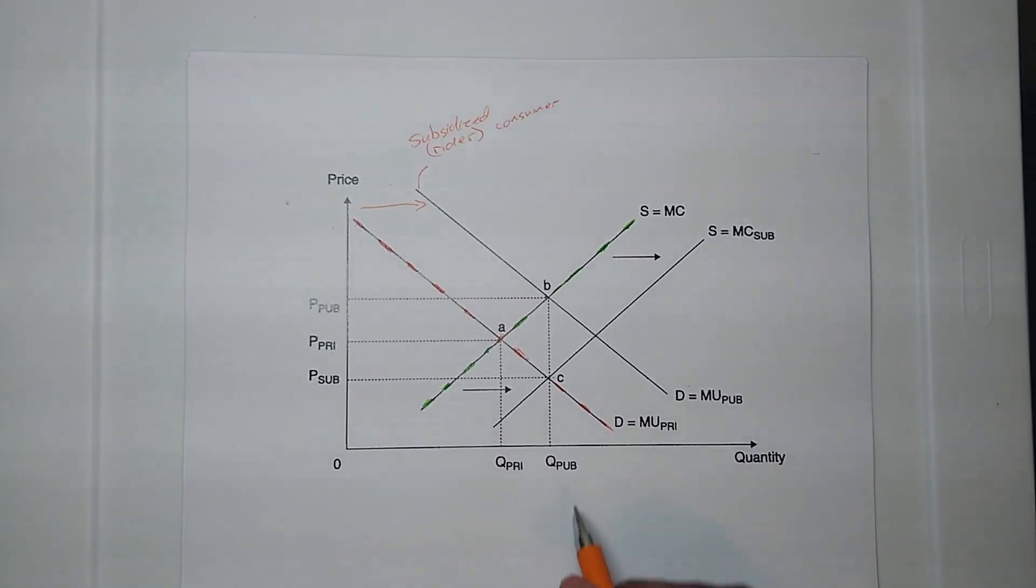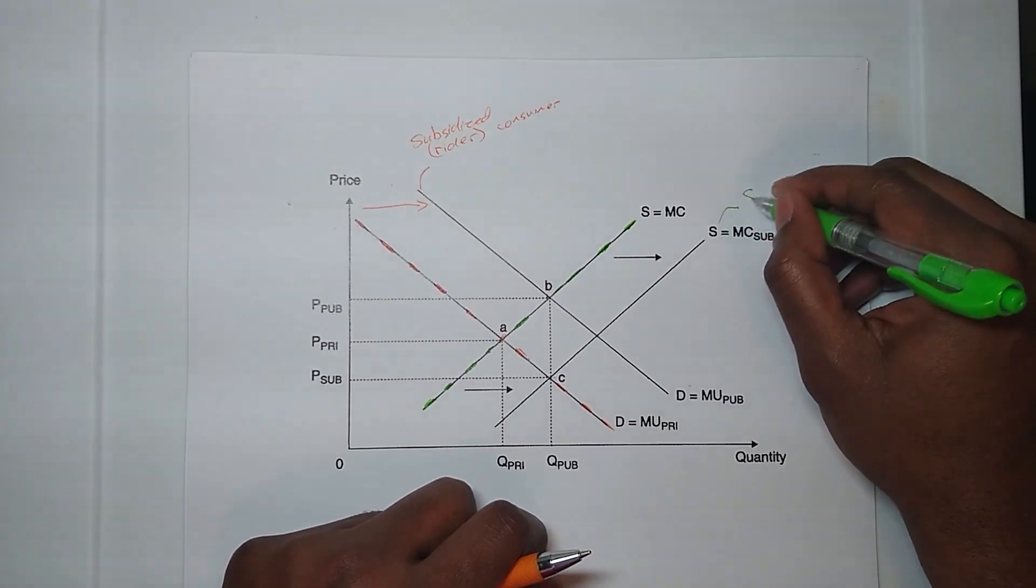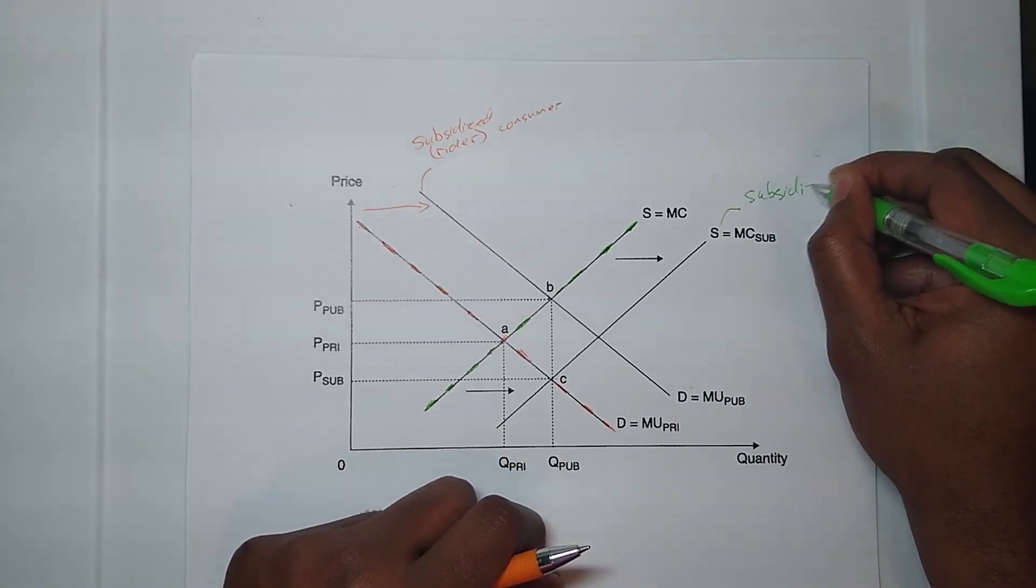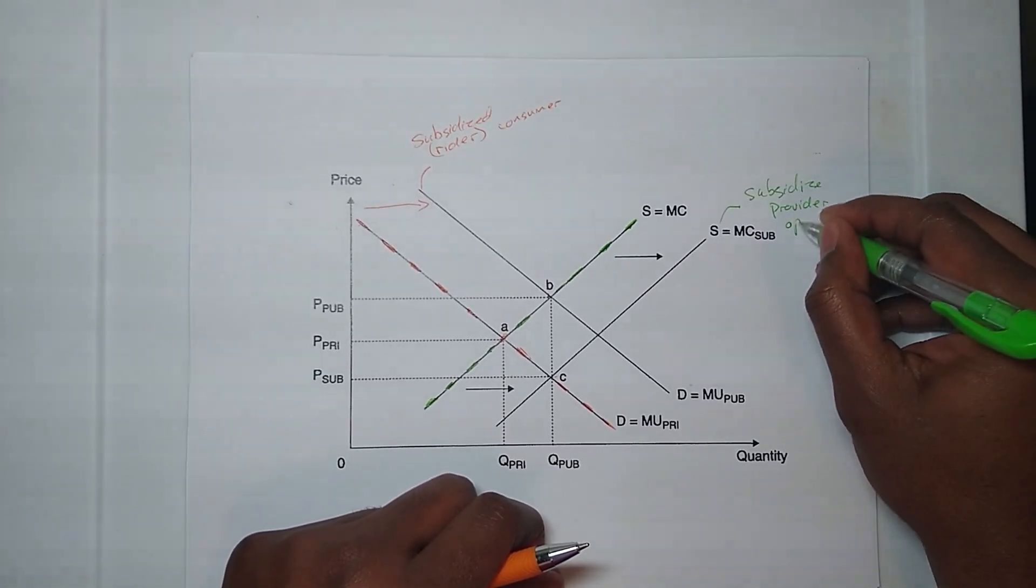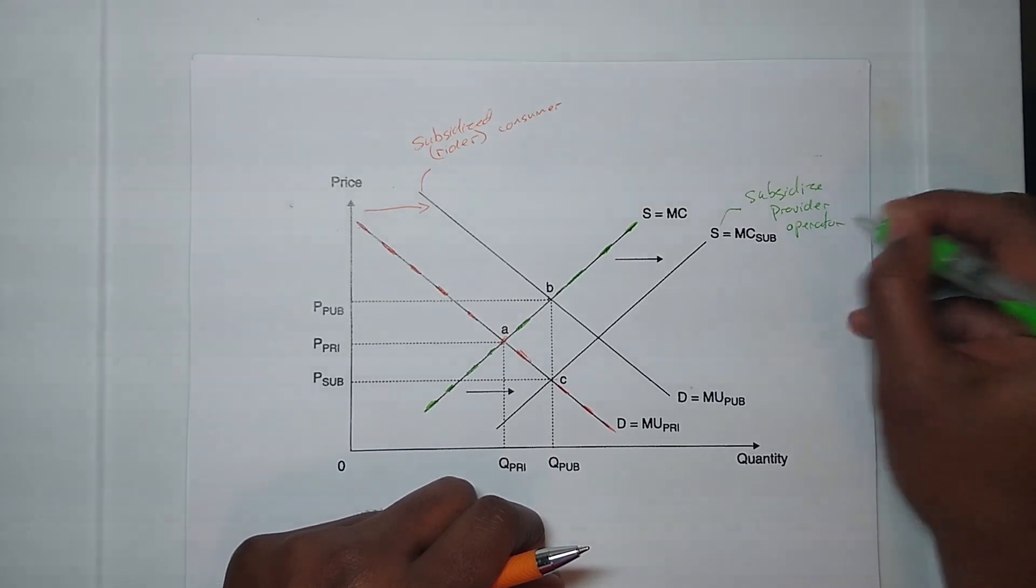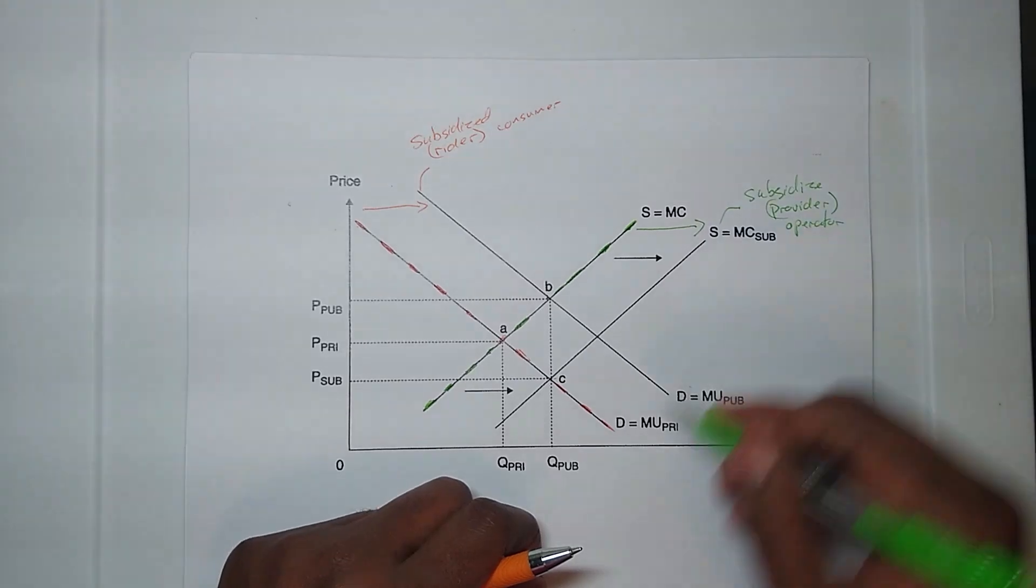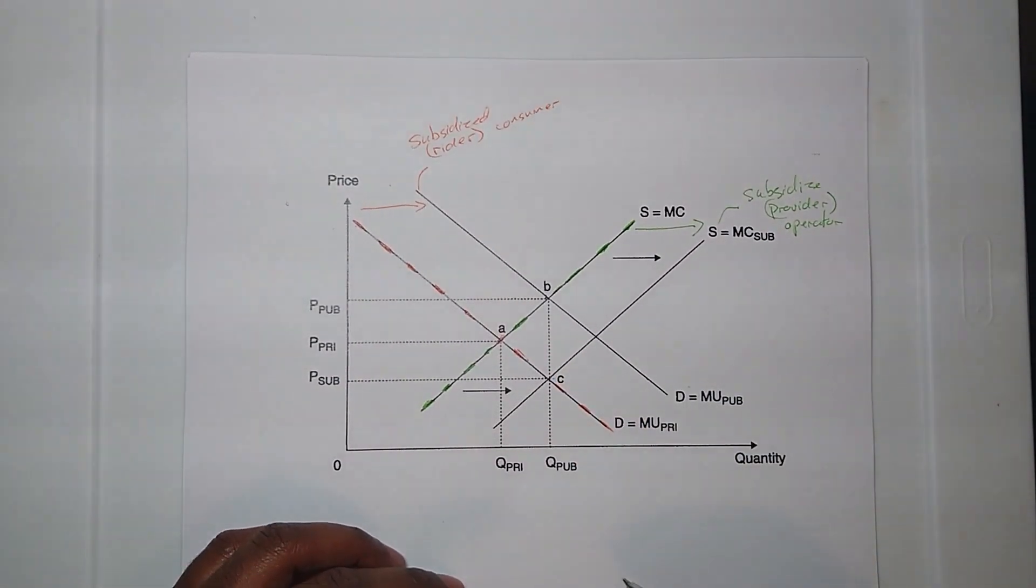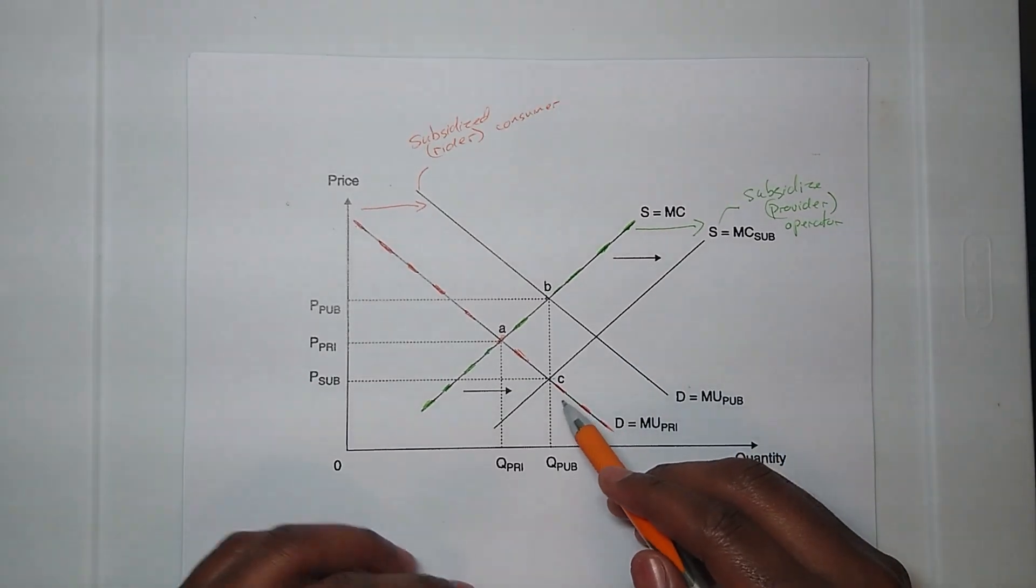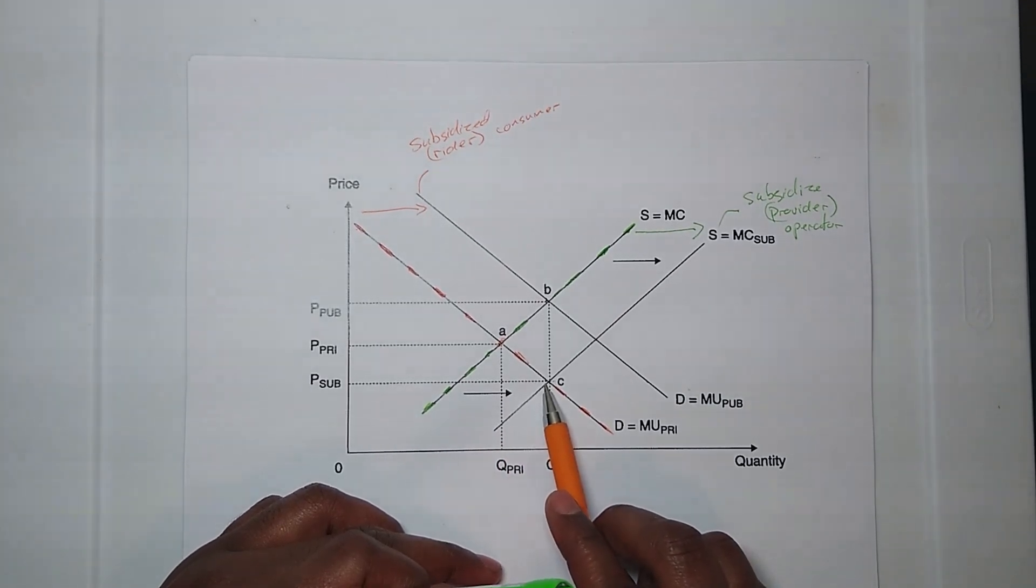But, if you were to subsidize the provider or the operator of the transportation service, then you can increase the amount of supply for the demand that was initially needed. And so, by doing that, by increasing that supply, you move your supply curve over.